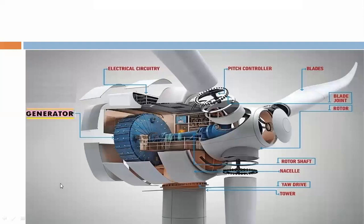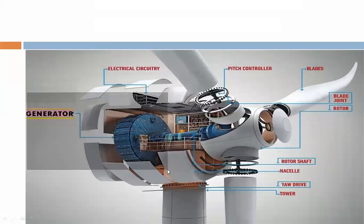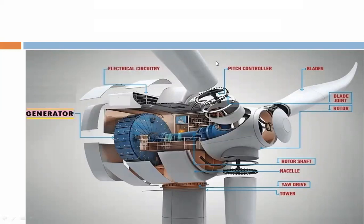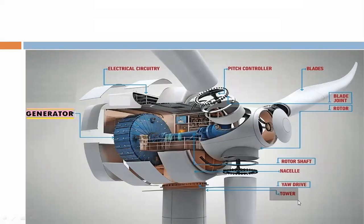Here is the pictorial view of a wind power plant. The generator is located here — see that portion. The electrical circuitry, pitch controller, blades, blade joint, rotor, rotor shaft, nacelle, drive, and tower are all visible. In today's lecture, we are focusing on the generator.